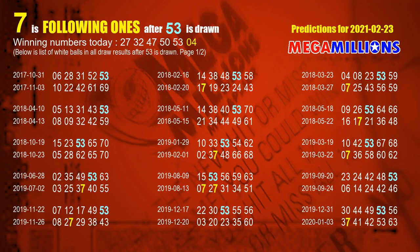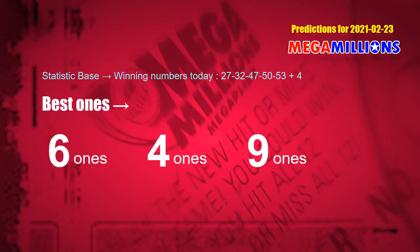The fifth white ball is 53. The most frequently following units digit is 7 when 53 is the winning number in the last draw. According to the statistics above, with white balls 27, 32, 47, 50, 53 drawn today, the frequent following units digits are 6 ones, 4 ones, and 9 ones.